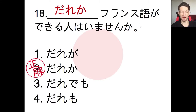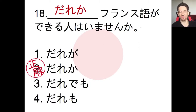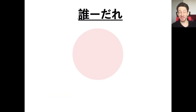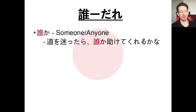We don't say amerikago — we say eigo because it comes from England. You can't do it for every country, but a lot of the time you just add -go to the country name. Dare ka means someone or anyone. Dare by itself means who, and dare ka means someone or anyone.